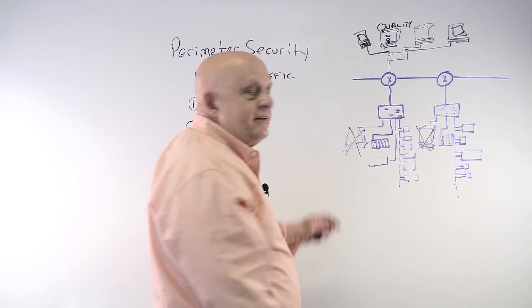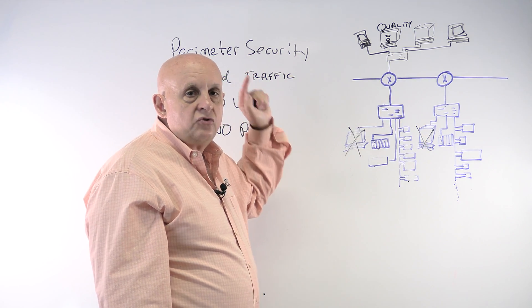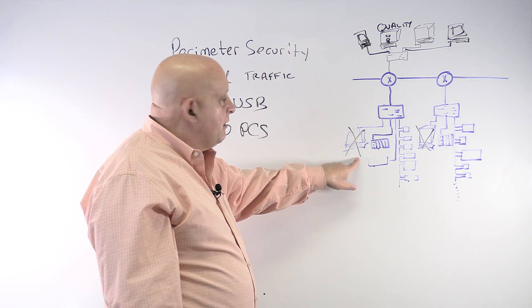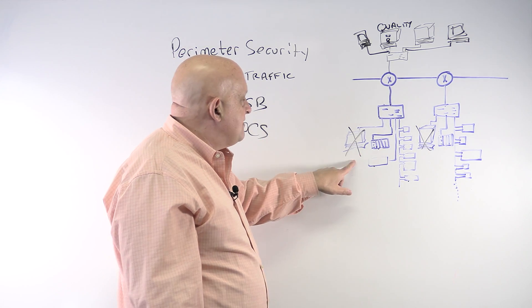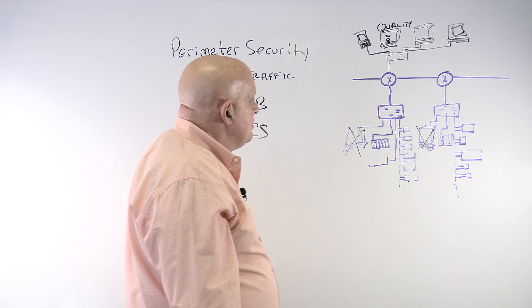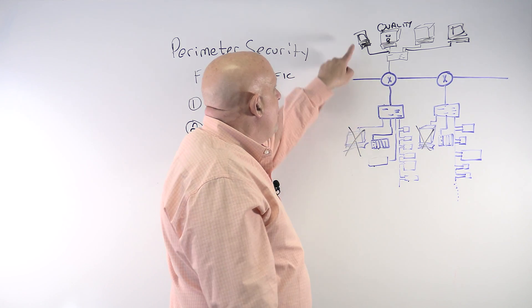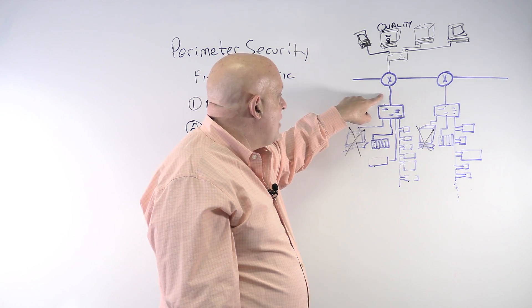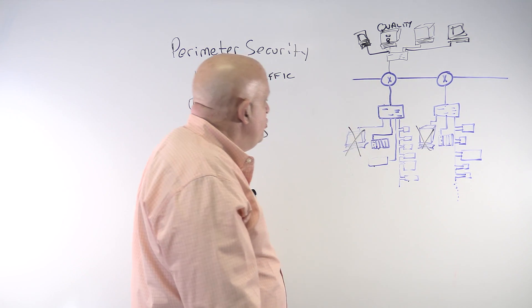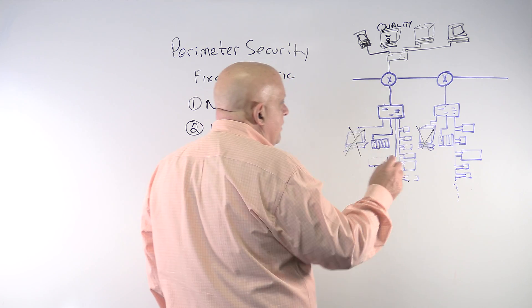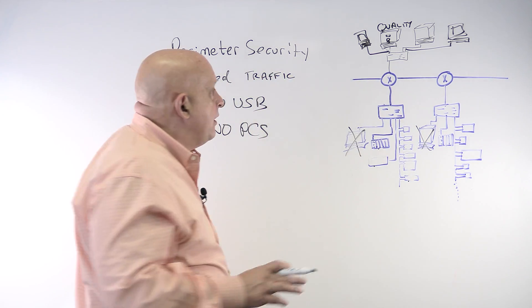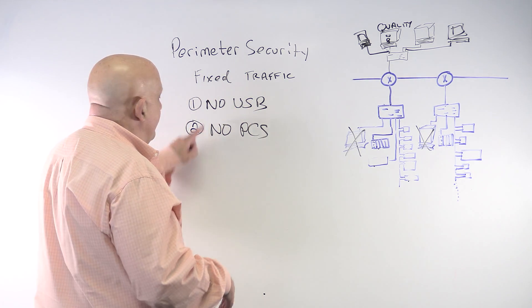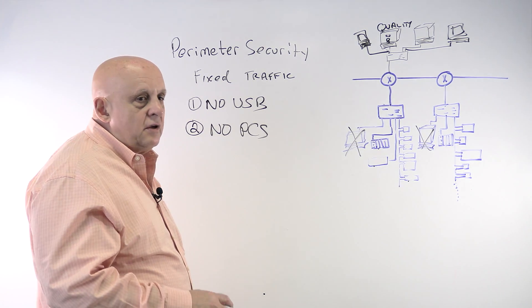Take those PCs out and connect them on the IT side, so users have to be authenticated using standard Active Directory or whatever you use to authenticate people over there. If they get corrupted, and we're monitoring perimeter security traffic, we can then see that something new is going on. It makes it easier to control and track what these PCs are doing if they're on the IT side of the world.